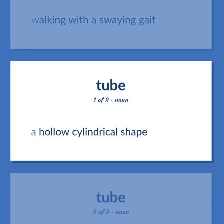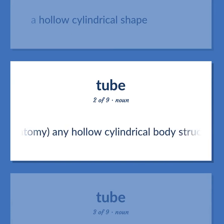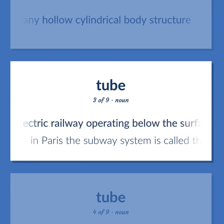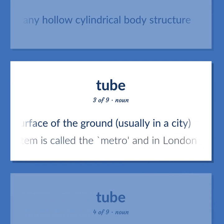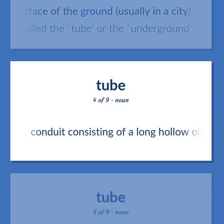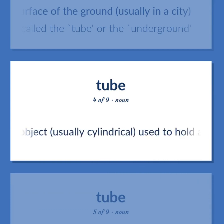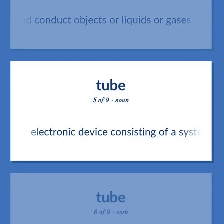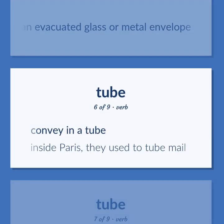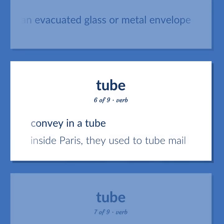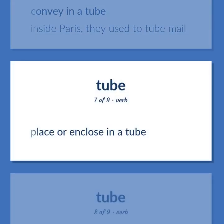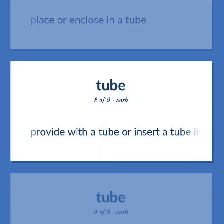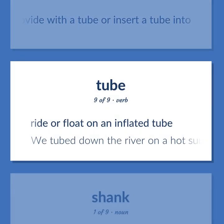Tube: a hollow cylindrical shape. Anatomy — any hollow cylindrical body structure. An electric railway operating below the surface of the ground, usually in a city. In Paris the subway system is called the metro, and in London it is called the tube, or the underground. Conduit consisting of a long hollow object, usually cylindrical, used to hold and conduct objects or liquids or gases. Convey in a tube — inside Paris, they used to tube mail. Place or enclose in a tube. Provide with a tube or insert a tube into. Ride or float on an inflated tube — we tubed down the river on a hot summer day.